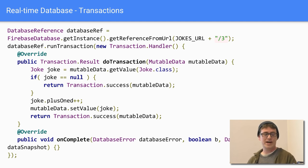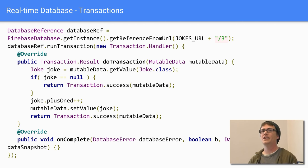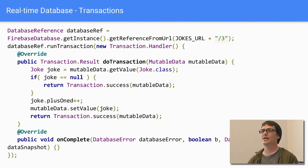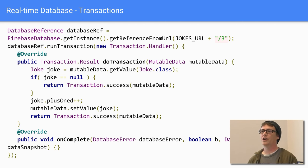The real-time database also supports transactions. If multiple people are accessing one area and you don't want to overwrite data, a transaction will check for conflicts before pushing up data. If there's a conflict, it'll keep retrying until it can push without conflict, ensuring you don't override anyone else's work on the same key.